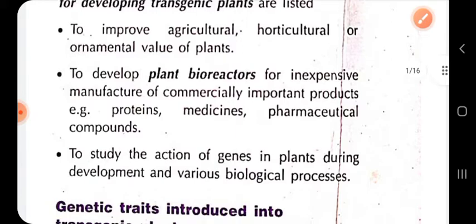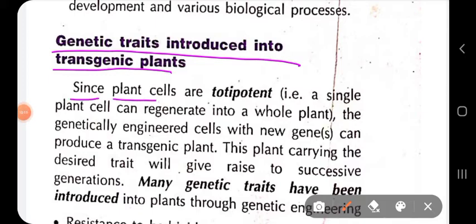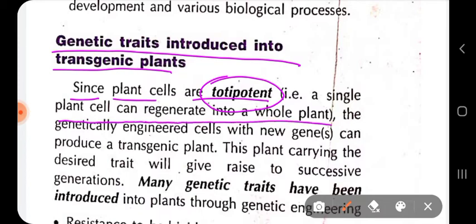Genetic traits introduced into transgenic plants are stable because all plant cells are totipotent — meaning they have the ability to regenerate into a whole plant. Since all plant cells are totipotent, genetically engineered cells carrying new genes can also develop into a transgenic plant.